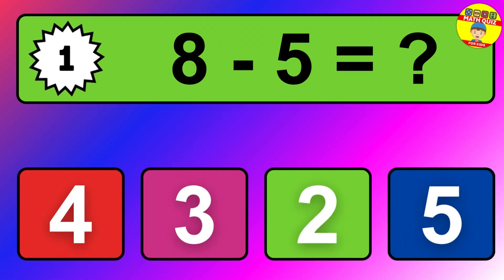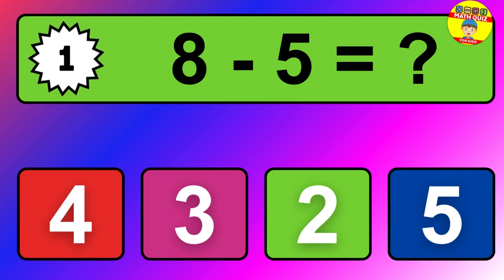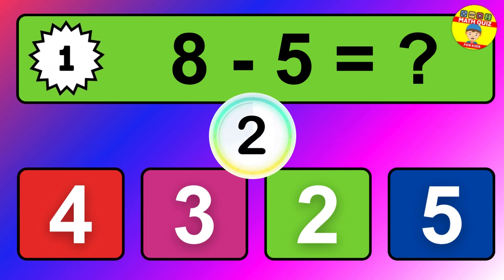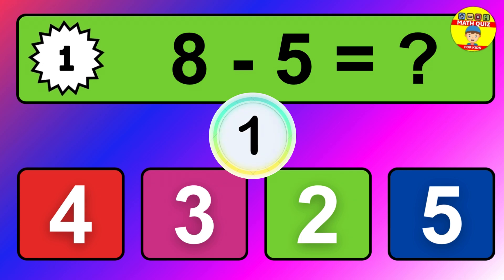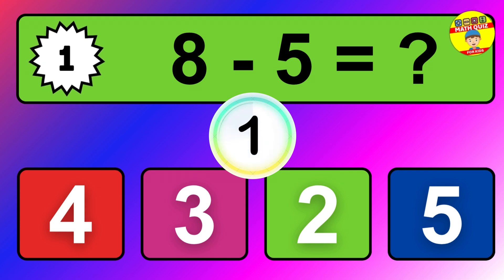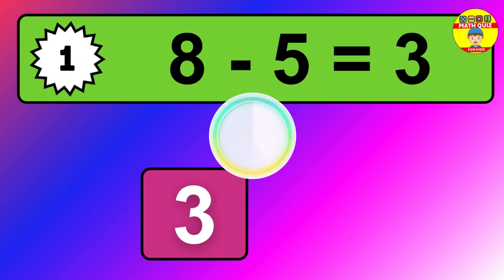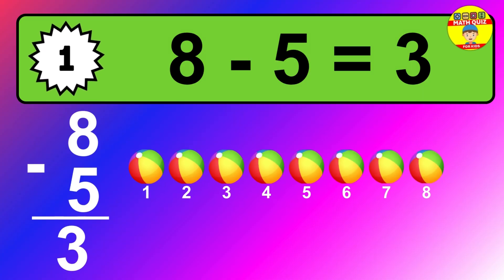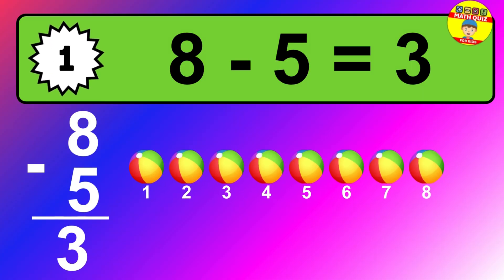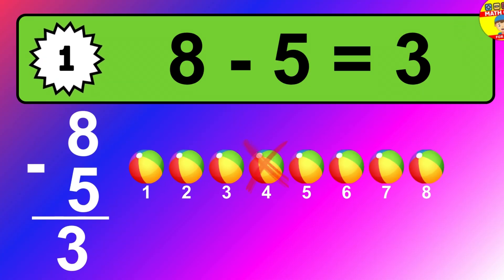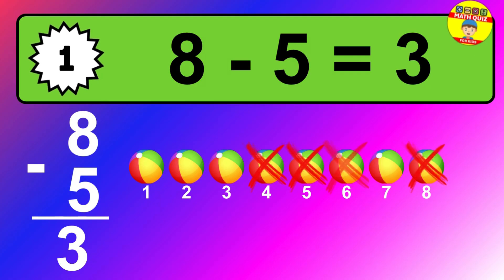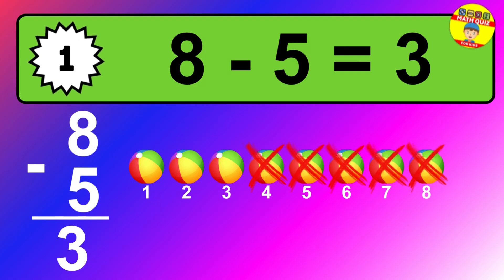Question 1. 8 minus 5 equals what? So the answer is 8 minus 5 is 3. Let's count it. 1, 2, 3.